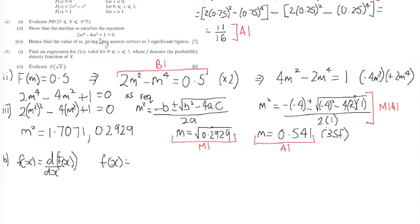So little f of x, differentiating our cumulative distribution function gives us 4x minus 4x cubed. And that is all that is needed. When we come to getting the marks on this equation, we get a method mark for demonstrating that we need to differentiate the cumulative distribution function and we get an accuracy mark following on from that if you then differentiated to get the correct function.